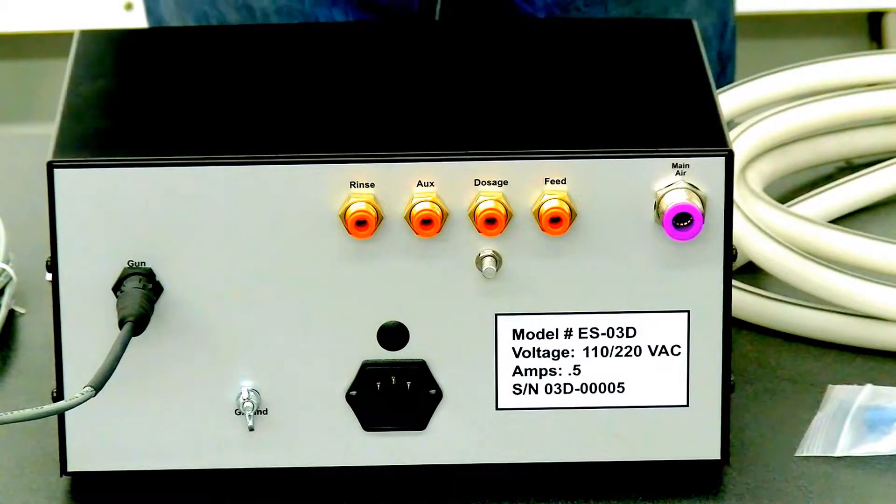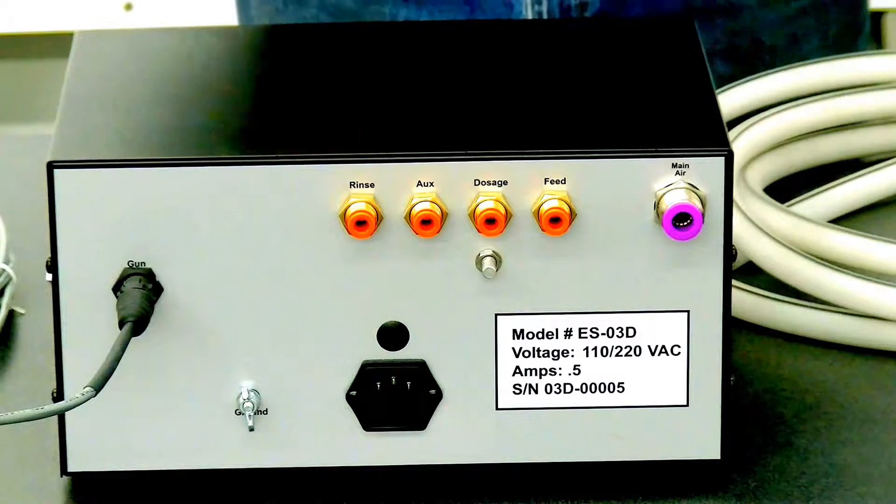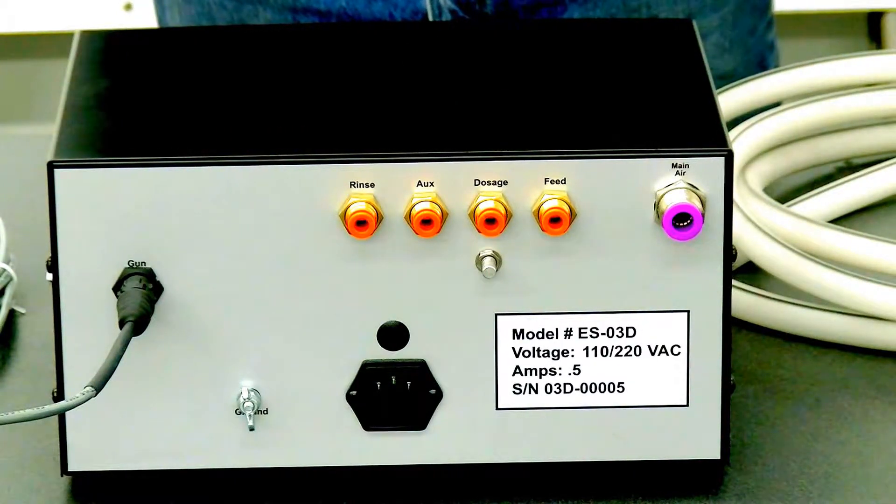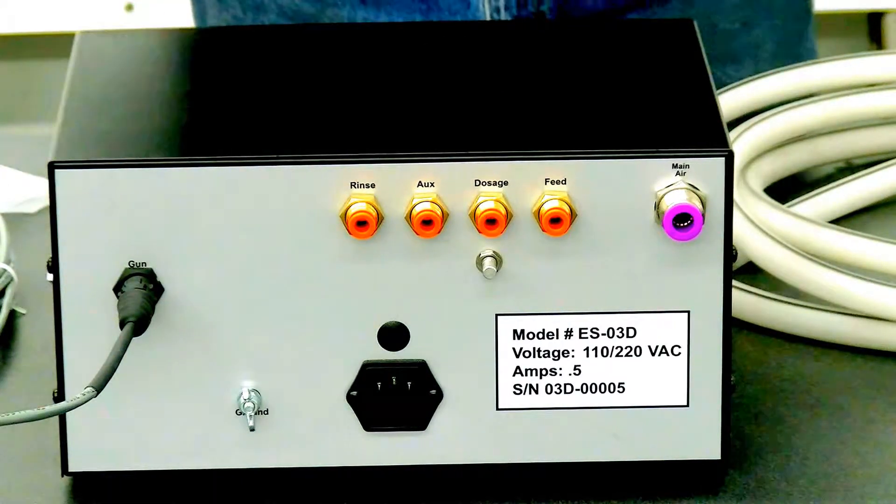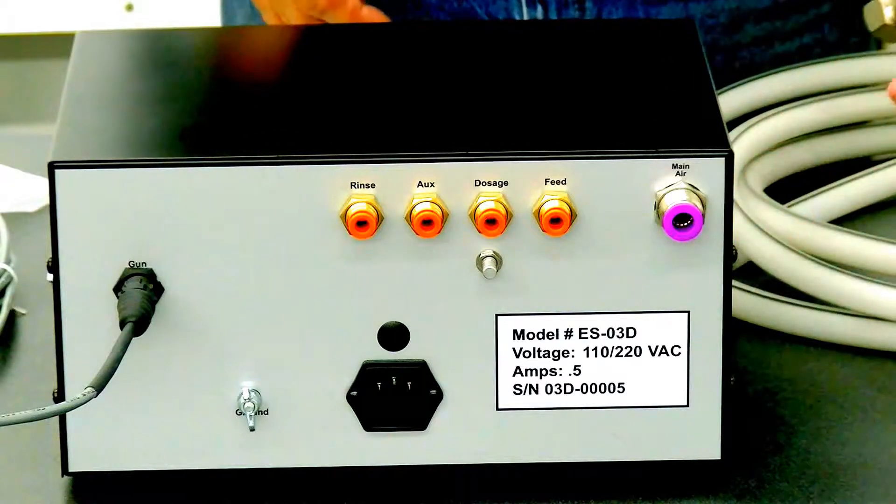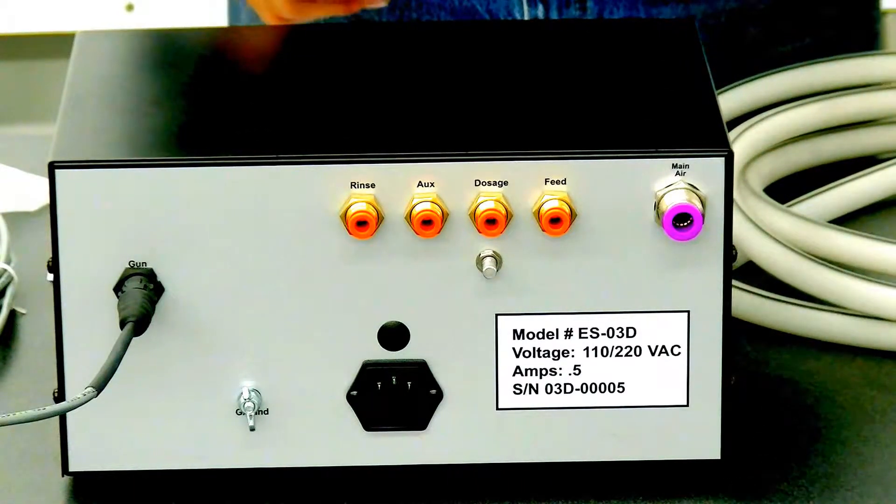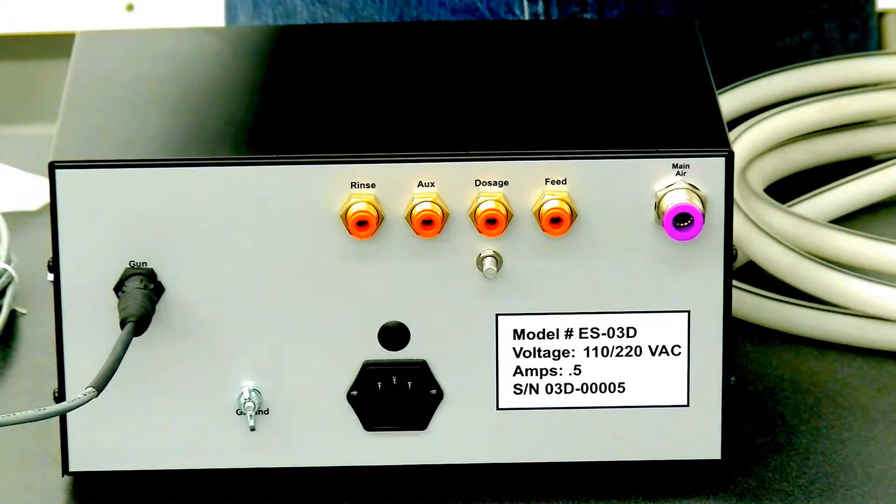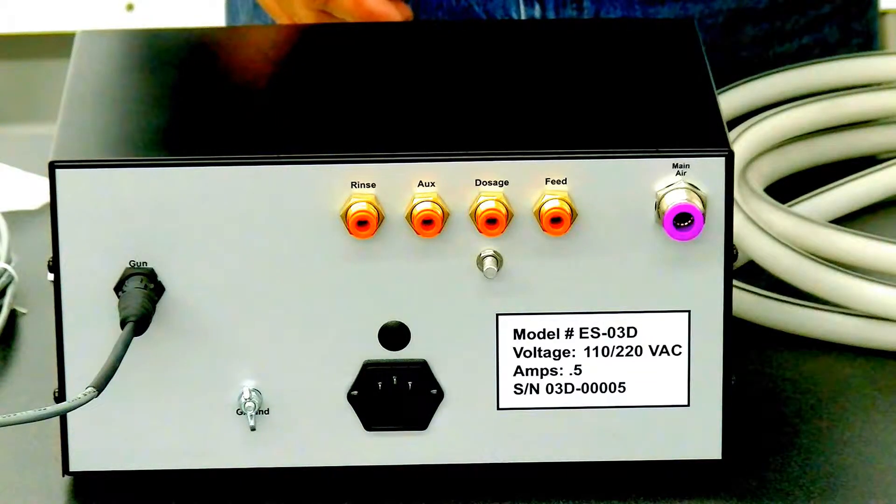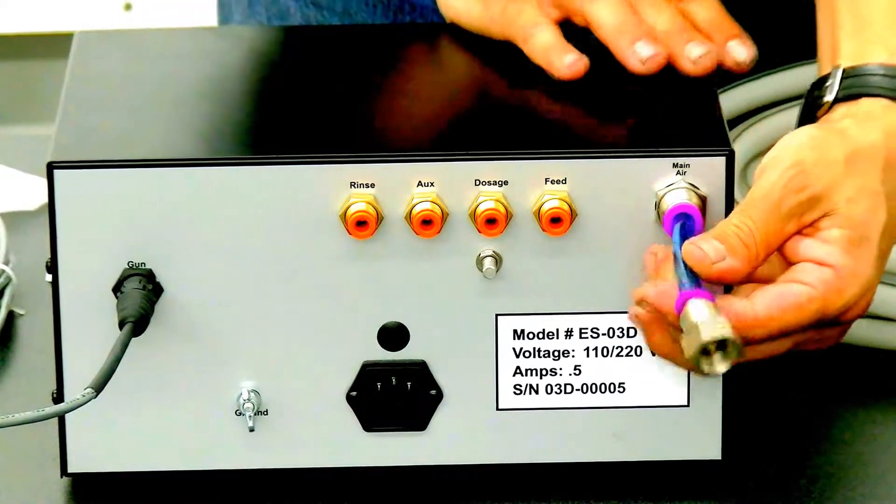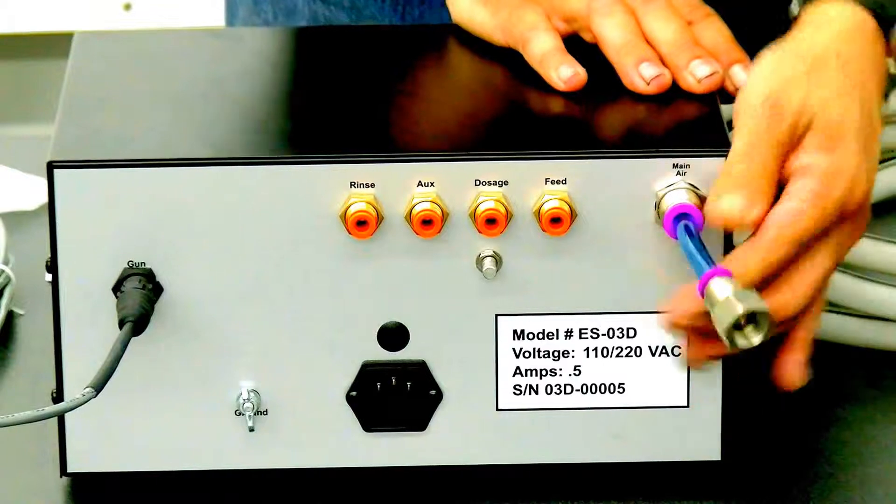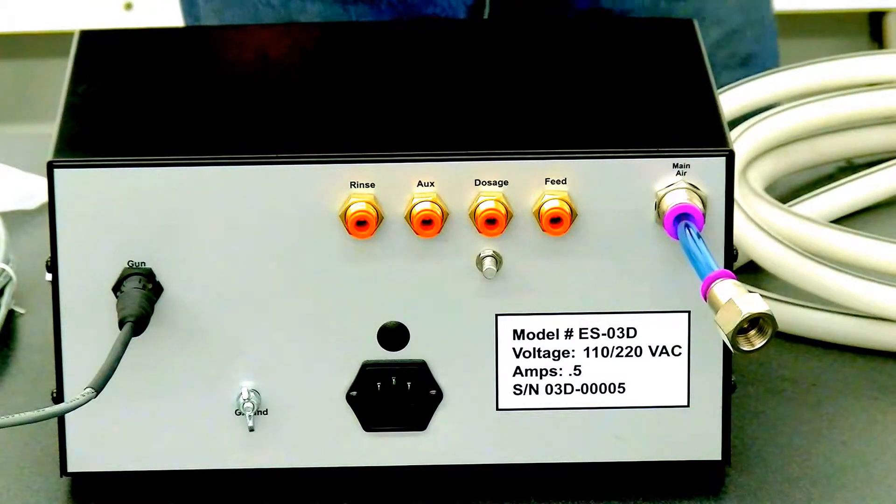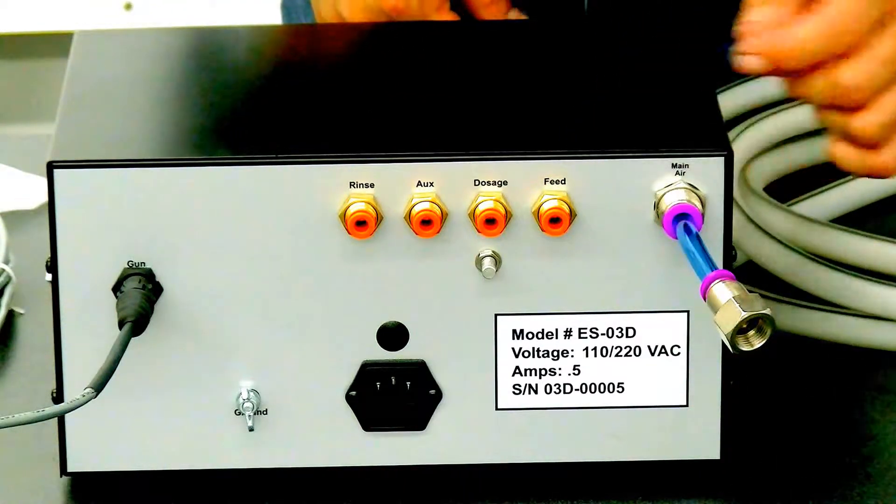Next, we're going to put all the air lines and portions into our ESO3DD unit. We have a nice adapter here. You can either come straight in with the 3/8 inch tubing if you have your shop set up that way or we have a connector here adapter where you can put one of your quick chucks in there. This is where our main air goes in. After we put our main air in, we are going to hook up our feed air.